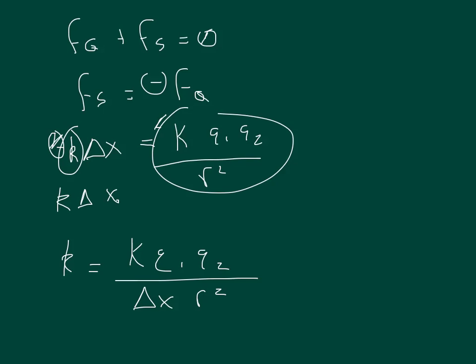Now to plug in, you get the capital K is equal to 8.99 times 10 to the 9th. Q1, Q1 it says is 0.808 microcoulombs, so 0.808 times 10 to the negative 6th coulombs.